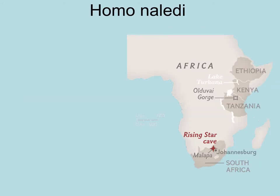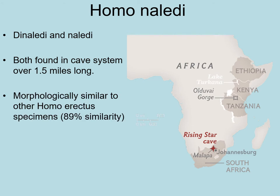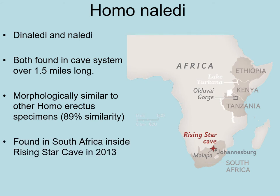The Homo naledi specimens were found in South Africa in the Naledi and Dinaledi chambers, within a cave system over one and a half miles long. They are morphologically similar to other Homo erectus specimens at about 89% similarity. Going back to our lumping versus splitting debate — is something being 11% different enough to say it's a new species, or should we just call it another Homo erectus?